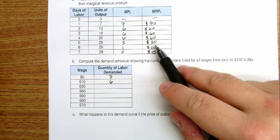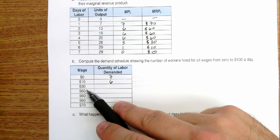If the marginal revenue product is 30 and the wage is 30, then I'd want to hire five workers.